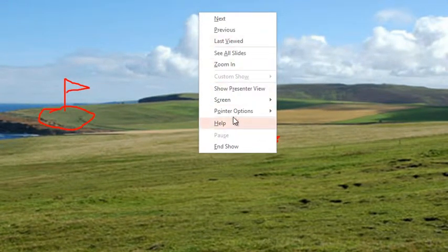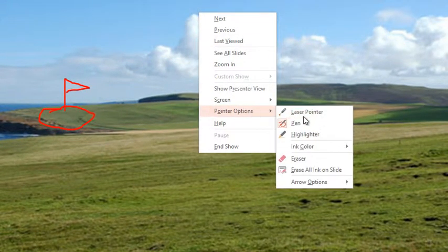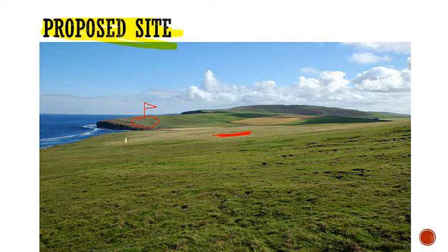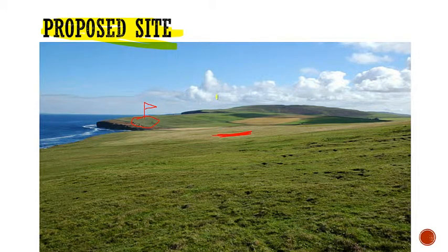If I want a highlighter, I right-click, go to pointer options, and choose highlighter. I can say this is still just proposed, it's going to a vote very soon, or whatever it might be. These tools let you really talk about what's on the screen rather than just being on the screen with confused faces in the audience.